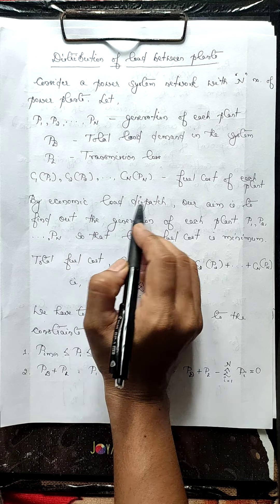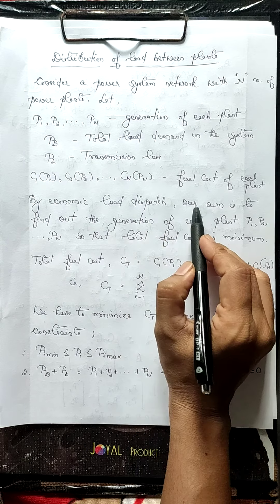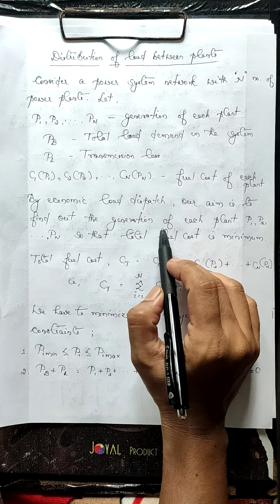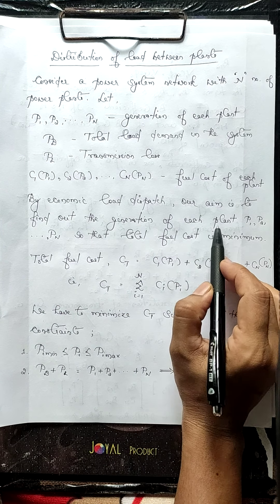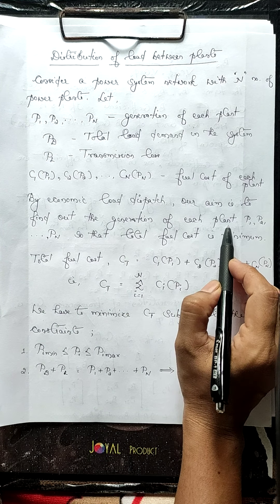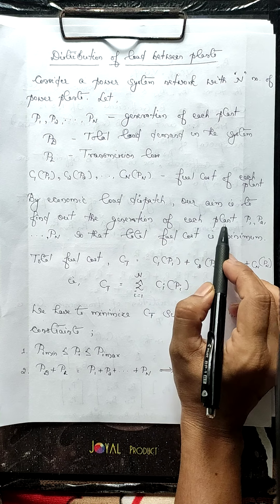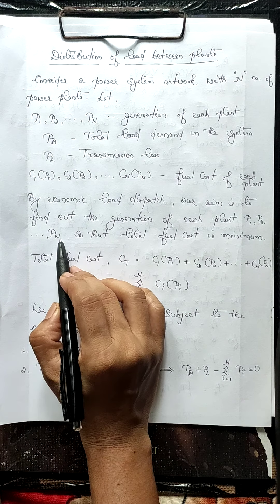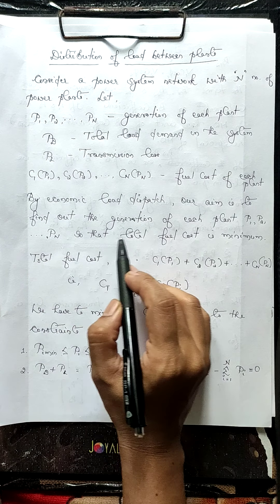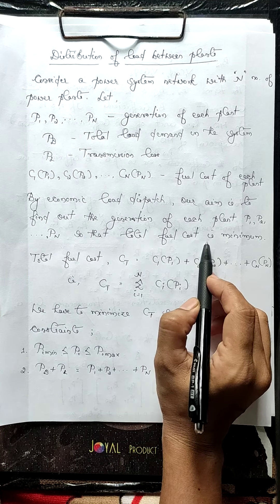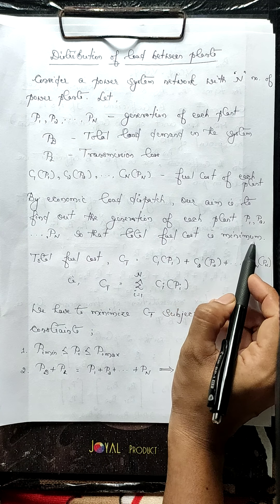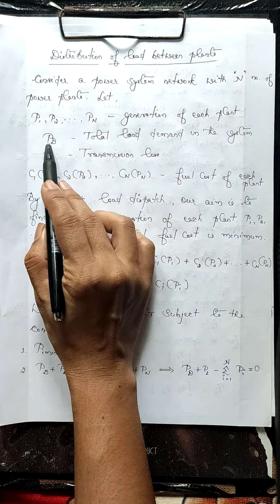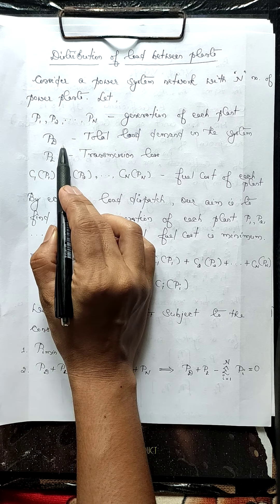By economic load dispatch, our aim is to find out the generation of each plant — that is, the power output P1, P2, etc., PN — so that the total fuel cost is minimum.